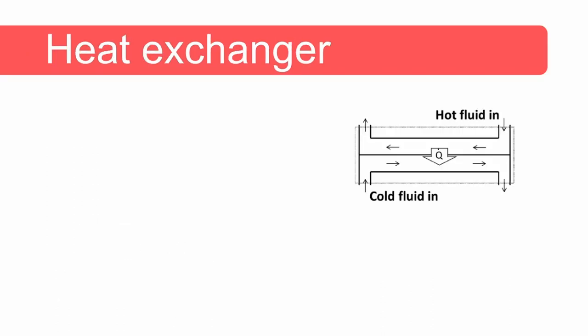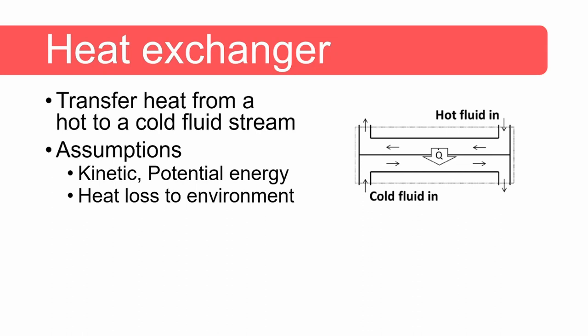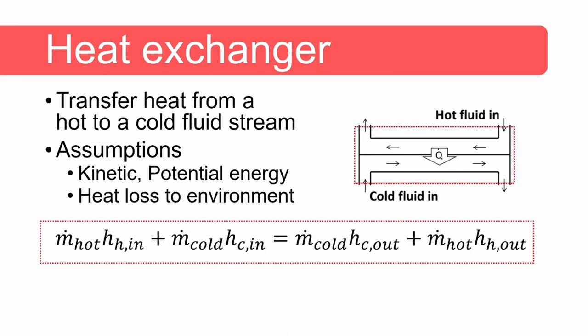Let's do another example focusing on a heat exchanger. In a heat exchanger, heat is transferred from a hot fluid to a colder fluid — for instance, in the radiator of your car, heat is transferred from the hot cooling water to the ambient air. Again we assume that we can safely ignore the kinetic and potential energy of the streams, and that the heat loss or gain is much smaller than the rate at which energy flows through the system. For the system enclosed by the red dashed line we can do an energy balance and write down the energy streams into the system and equate that to the energy streams out of the system.